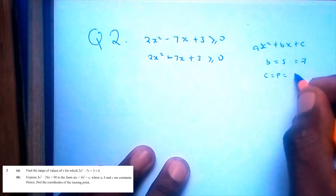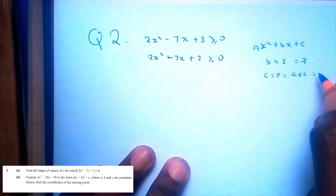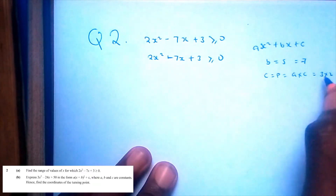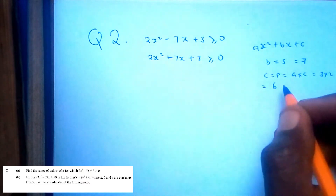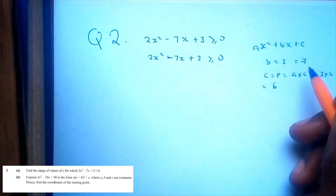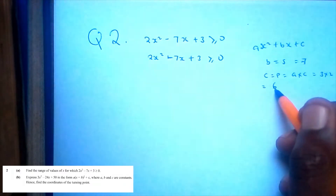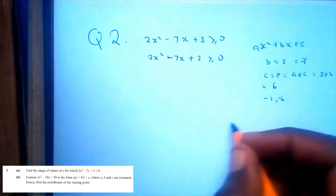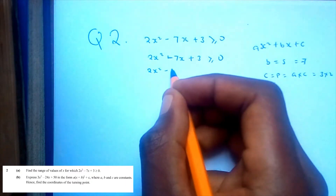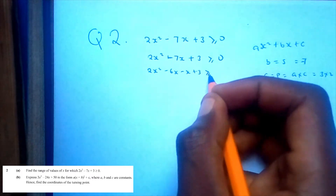The product is 2 × 3 = 6. We need two numbers that add to -7 and multiply to 6, which are -1 and -6. So we rewrite as 2x² - 6x - x + 3 ≤ 0, which factors to 2x(x - 3) - 1(x - 3) ≥ 0.